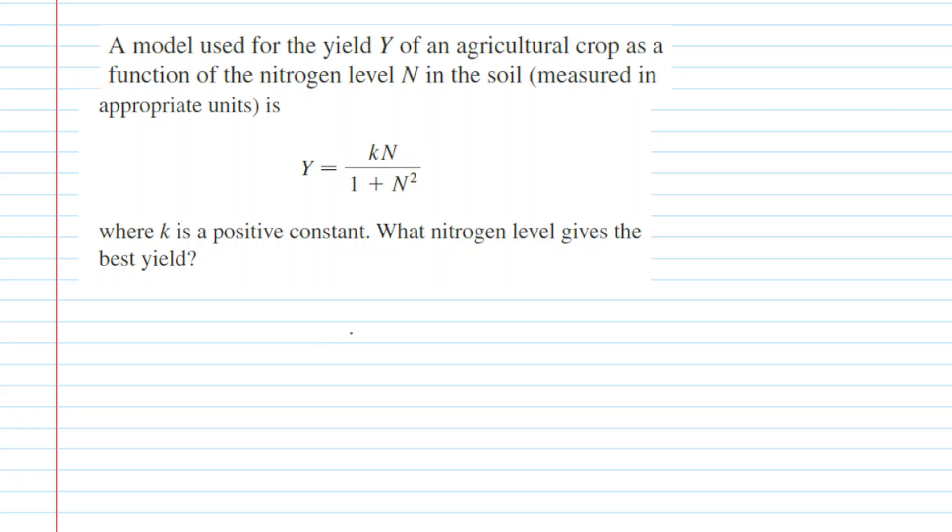This question asks us to determine the nitrogen level that gives the best yield. Presumably, the best yield would be the one that is maximized. So we're trying to maximize the value of the yield, Y. In order to do that, we need to take our function and calculate its derivative. Remember, Y is the yield and your variable is N, the nitrogen level in the soil. The k is a positive constant, as noted in the question.